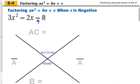So in this case, we have negative 8 times 3, which is going to give us negative 24. We still have negative 2 for our b value. So we're looking at factors that multiply together to give us negative 24, but also add together to give us negative 2.